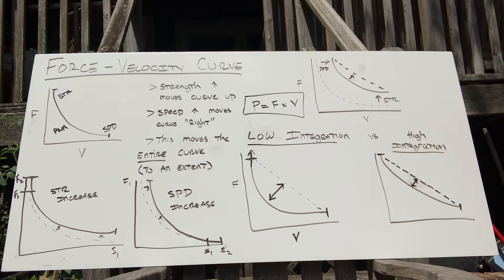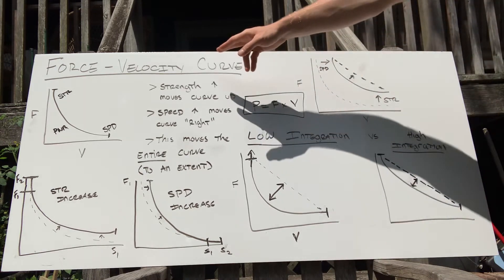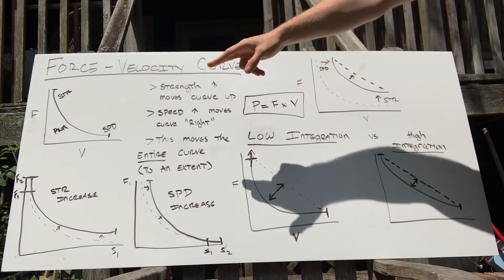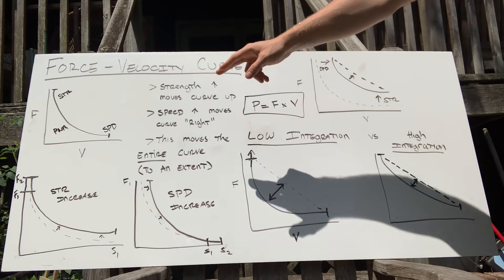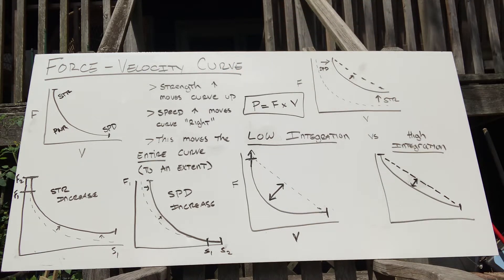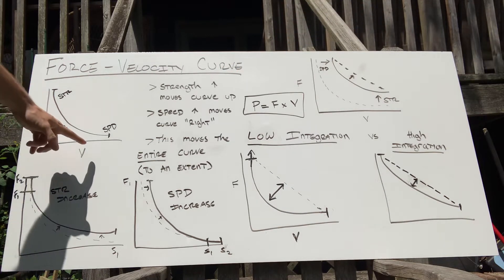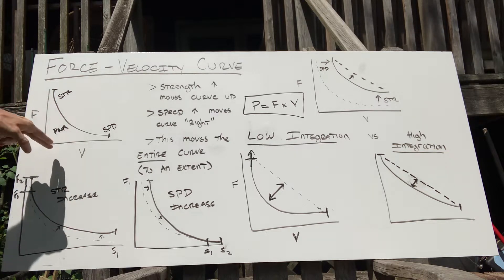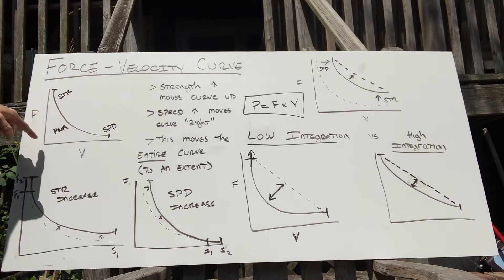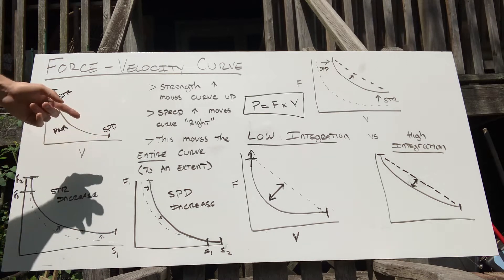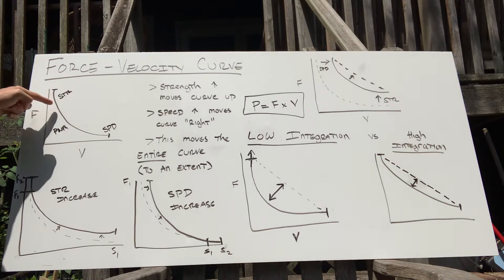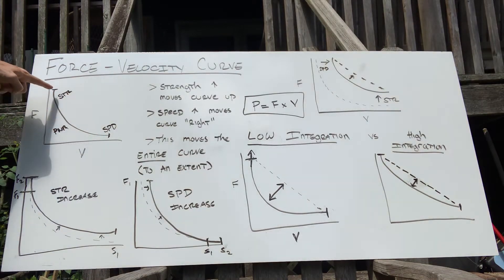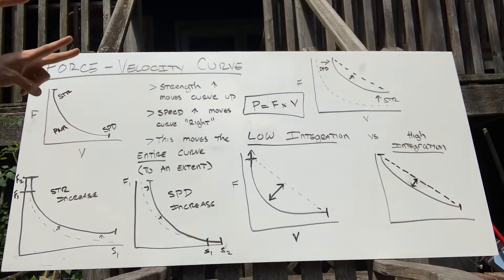The force-velocity curve is essentially a measured profile or theoretical estimated profile of how strong you are relative to how fast you can move. Here we have force, that's F, and velocity is V. As velocity increases, the faster we're able to move, the less force we're producing. Every point on this curve is essentially you.